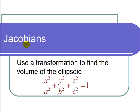This is a video on Jacobians. The question states, use a transformation to find the volume of the ellipsoid x squared over a squared plus y squared over b squared plus z squared over c squared equals 1.